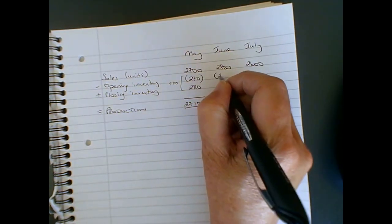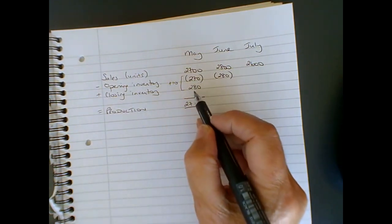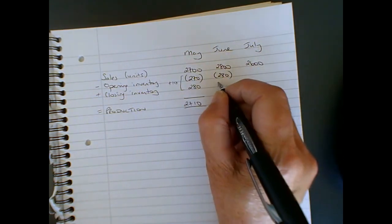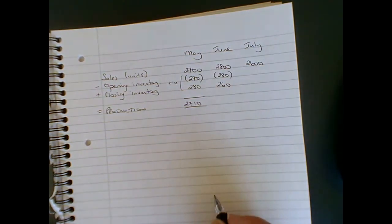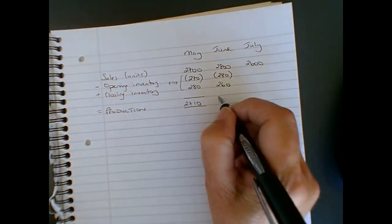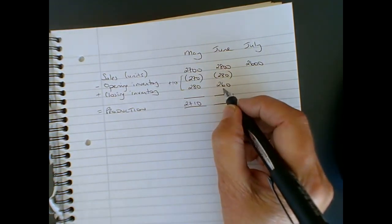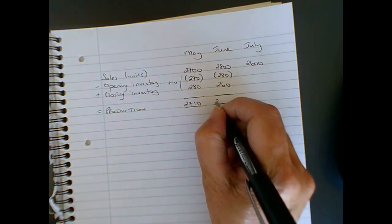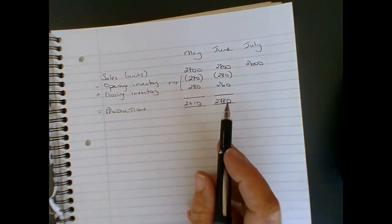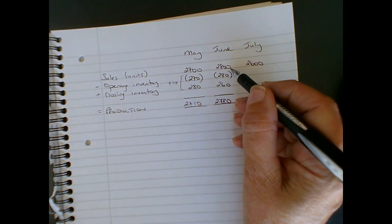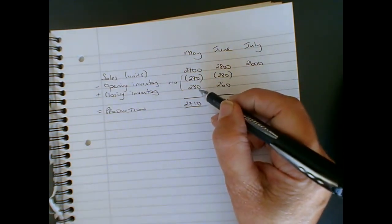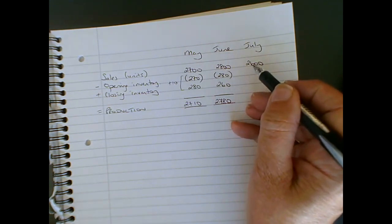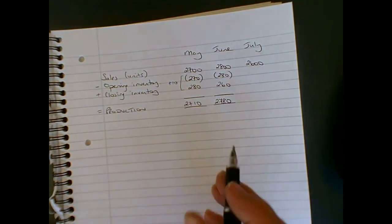That 280 is now going to become opening inventory for June. Because we've got those in at the end of May, we don't need to make them again in June. But we do need to make sure that the closing inventory at the end of June is 10% of July's output. Predicted sales 2,600. So that means that this time, we're actually reducing the inventory by 20 units. We need to make 20 fewer units than we're going to sell in order to make sure we've got the right amount in stock at the end. So we're actually going to make 2,780 units. That's the 2,800 we're going to sell minus the 280 that we had in stock, plus the 260 we need for the beginning of July.